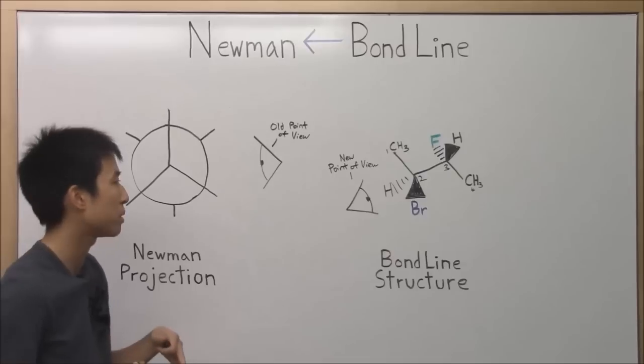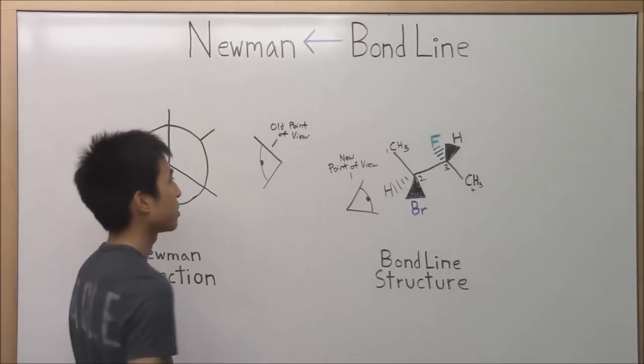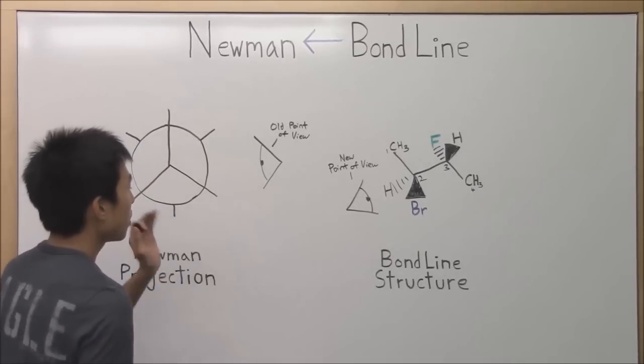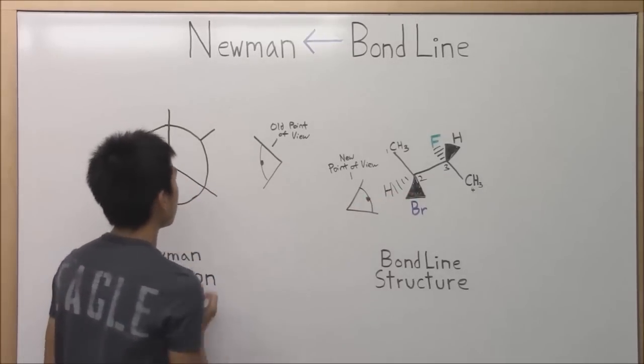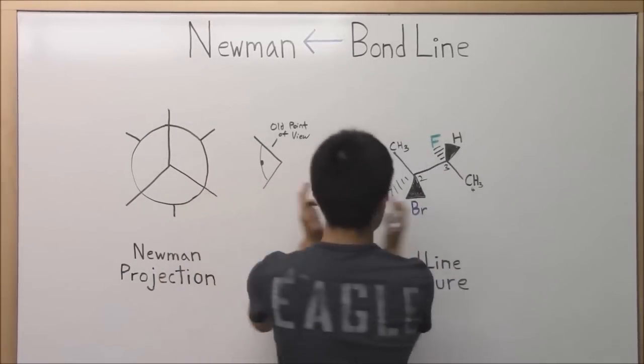Now if you have any questions about this, just pop it down below and we'll answer it for you. So in our new point of view, if we were to look like this, then we would see a Newman projection. And if we looked at it like this, then we would see our bond line structure.